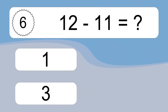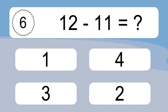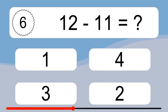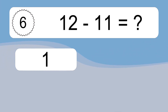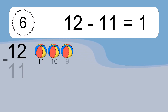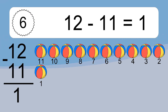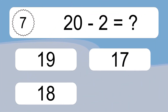12 minus 11 equals what? 12 minus 11 equals 1. Let's count it. 11, 10, 9, 8, 7, 6, 5, 4, 3, 2, 1.